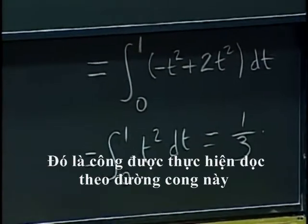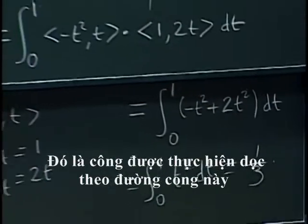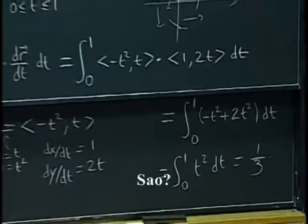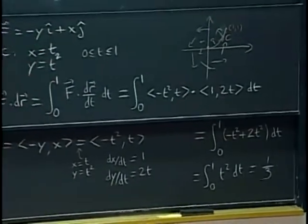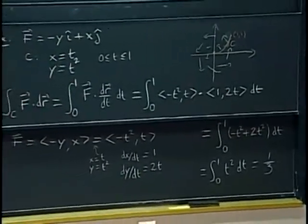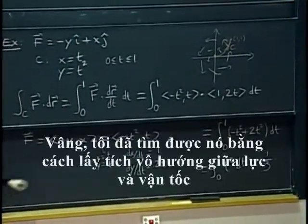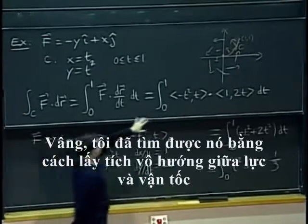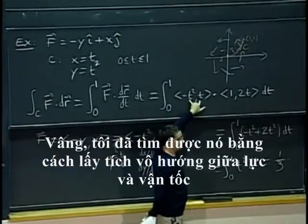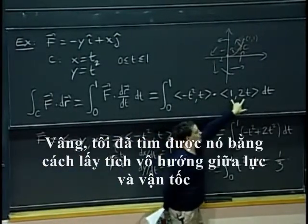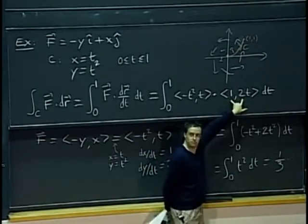That integral gives 1/3, which you all know how to evaluate. That is the work done by the force along this curve. I got negative t squared plus 2t squared by taking the dot product between the force and the velocity.